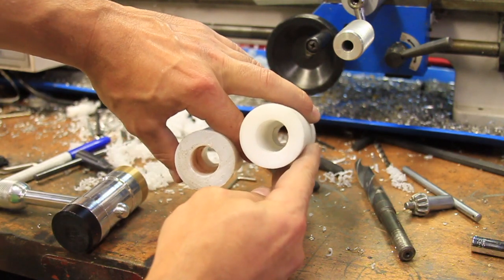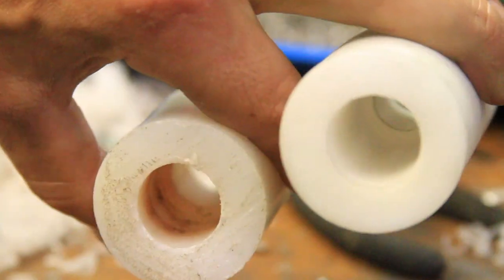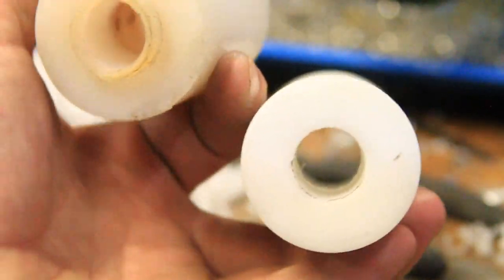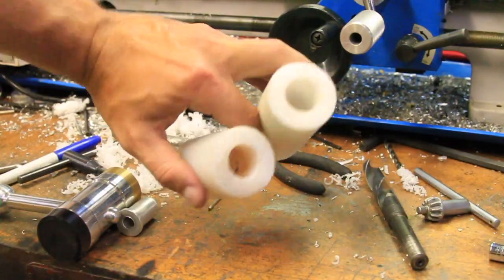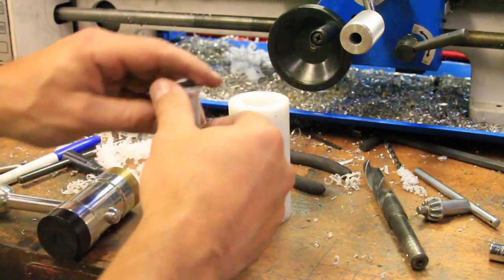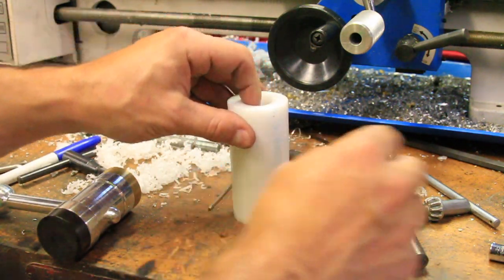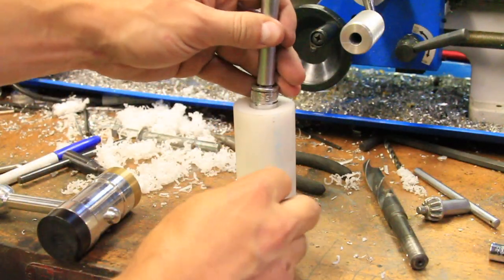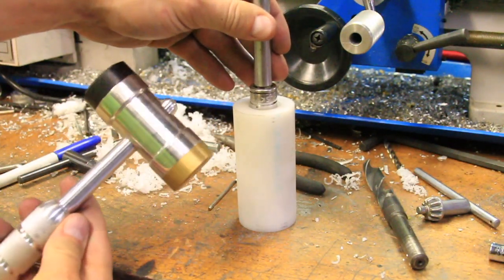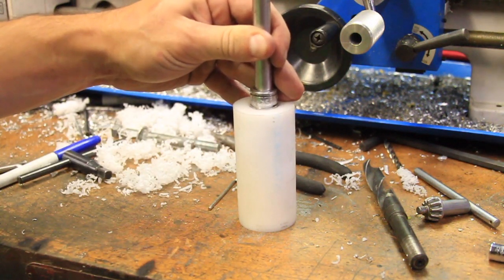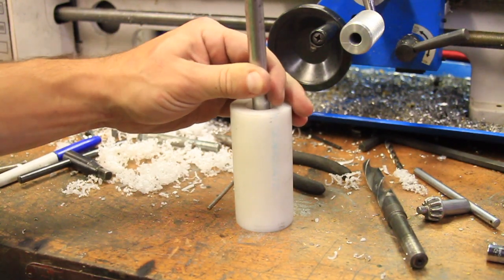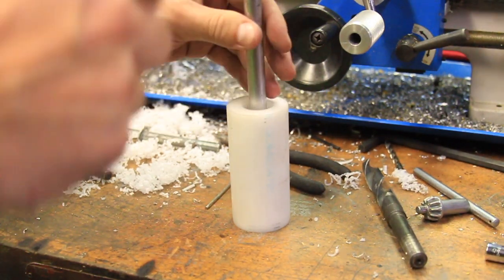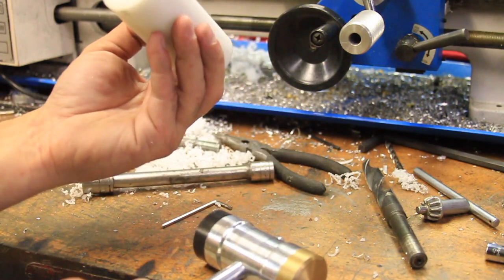Once the two boring operations were completed, the required shoulder was automatically created and matches the original nicely. All that was needed to install the bushing was just to tap it in and let it go home. I wanted to install the bushing at this point so the next facing cuts to bring it to the final length will end up exactly flush with the installed bushing.